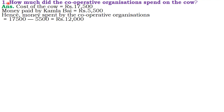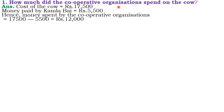How much did the cooperative organization spend on the cow? Cost of the cow is Rs. 70,500. Money paid by Kamla Bai is Rs. 5,500. Hence, money spent by the cooperative organization is Rs. 70,500 minus Rs. 5,500 = Rs. 12,000. Here we have done the subtraction, as we discussed earlier.